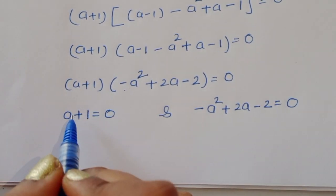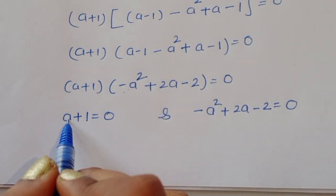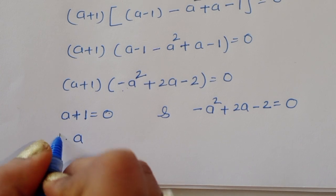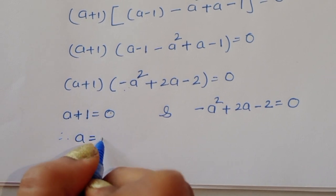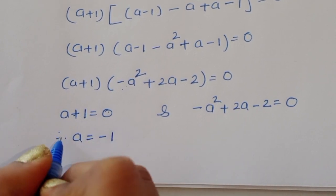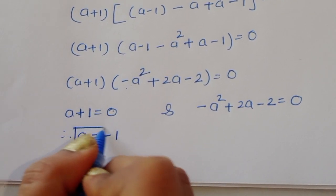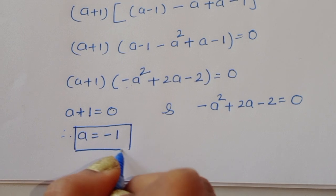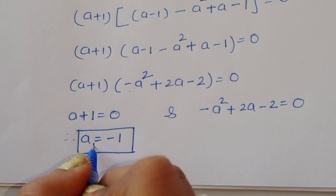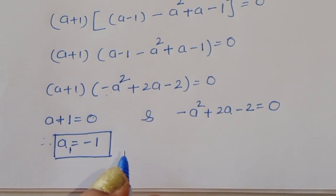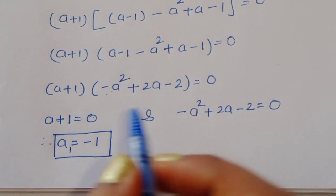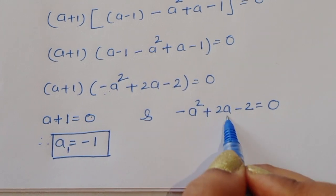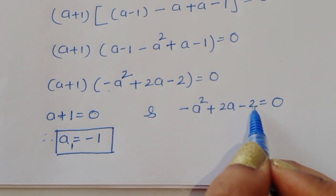From the first equation a + 1 = 0, we get therefore a is equal to minus 1. This is the first value, a₁ = −1. Now we solve the second equation: minus a squared plus 2a minus 2 is equal to 0.